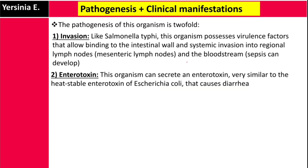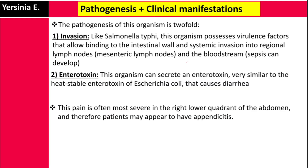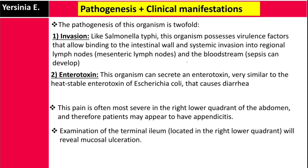Regarding clinical manifestations, the abdominal pain is most severe in the right lower quadrant of the abdomen, and therefore patients may appear to have appendicitis. Examination of the terminal ileum — located in the right lower quadrant — will reveal mucosal ulceration.